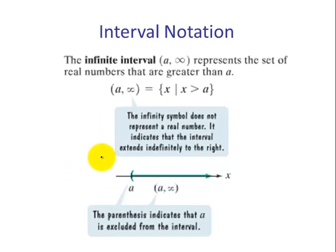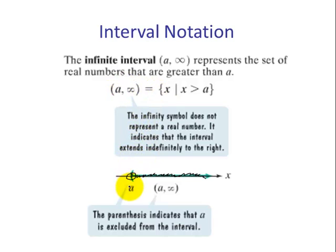An indefinite interval involves infinity. In this case, we have a number line beginning at A, but it can't equal A, and then all values beyond A to positive infinity. As an inequality, we say X is greater than A — not equal to, because it can't equal A. In interval notation, we start with the smallest value A, use a parenthesis since it doesn't equal A, then a comma, the infinity symbol, and always use a parenthesis with infinity because we can never equal infinity — so we never use a bracket involving infinity.